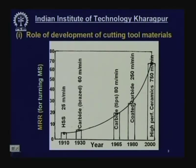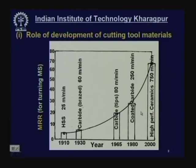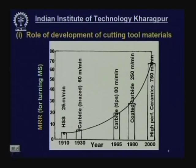Here is a plot showing metal removal rate or productivity in machining mild steel from 1910 to 2000 and beyond. Productivity has increased almost exponentially from 1910 to 2000 — very rapid improvements are taking place. In 1910, high speed steel could machine material only at 25 meters per minute. Productivity is a function of cutting velocity — more velocity means more productivity.